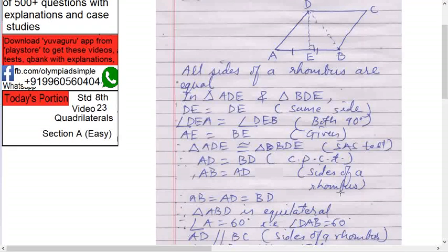But also you know one thing: AB equals to AD. AB equals to BD, right? All the three. So these three sides are equal. What does it mean? Triangle ABD is an equilateral triangle.